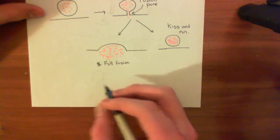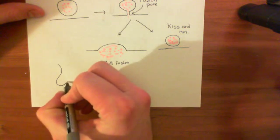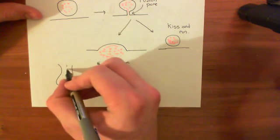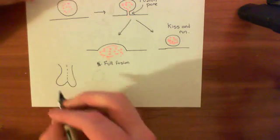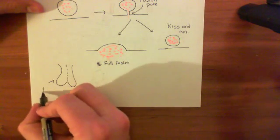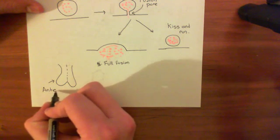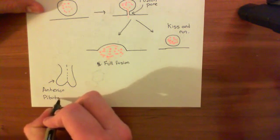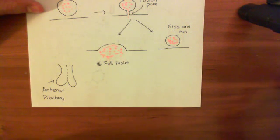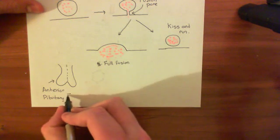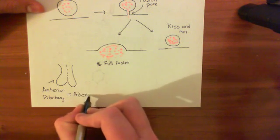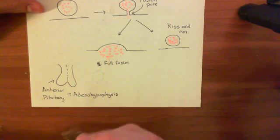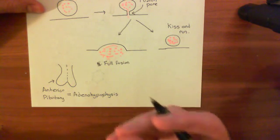So the posterior pituitary gland — just a bit of a reminder of the pituitary gland first. The pituitary gland consists of two portions and is a gland at the base of the brain. You have the anterior pituitary here, also sometimes known as the adenohypophysis. This anterior pituitary gland consists of a bunch of cells which are secreting hormones — it's the portion of the pituitary gland which releases hormones that have been produced on site.